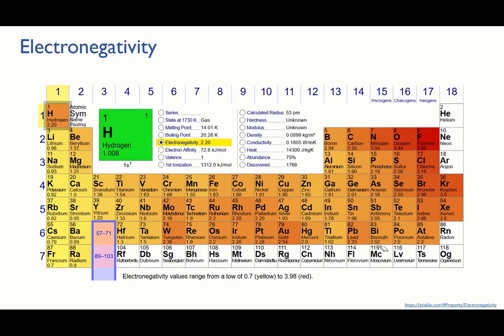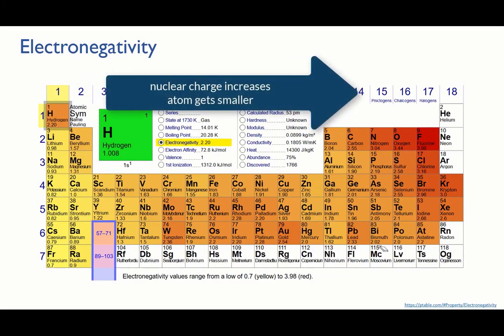So, what's going on is that as you go across a period, the nuclear charge increases, while the atom gets smaller, which means that the distance of the bonding electrons from the nucleus decreases. Remember that trend for atomic radius.